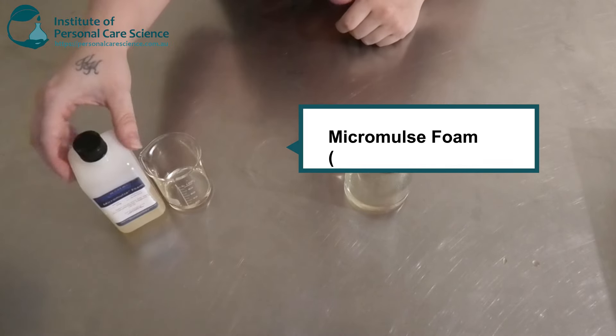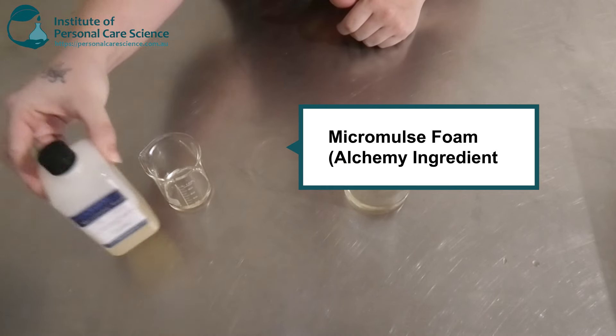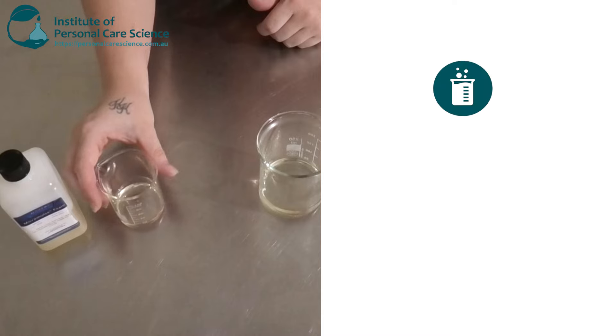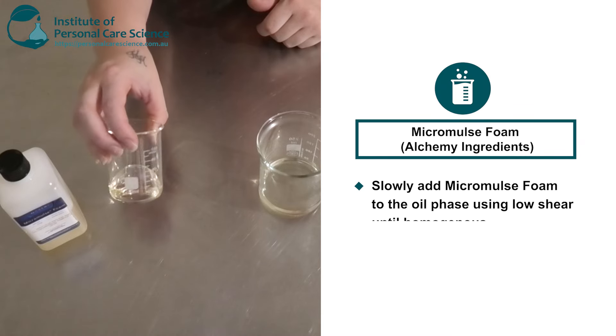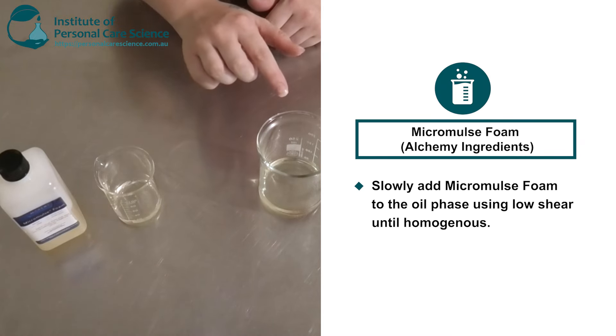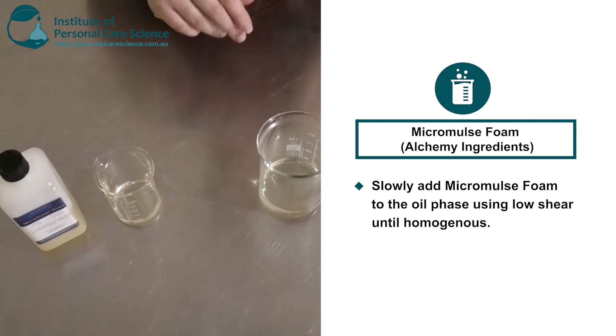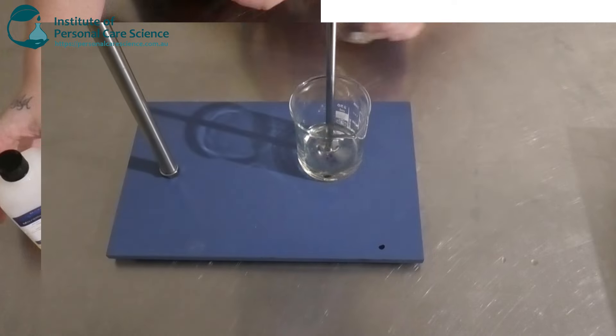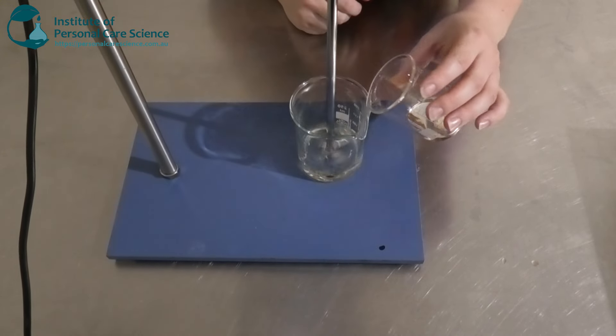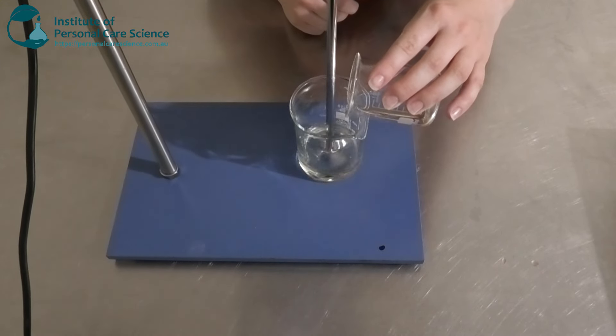Now, I'm going to be using the Micromulse Foam by Alchemy Ingredients. It is advised by the supplier that the Micromulse Foam is added slowly to the oil phase. And I'm going to use my overhead mixer, my propeller mixer. I'm going to be using low shear because you don't want to use high shear because you'll cause foam. And we're just going to slowly add the Micromulse Foam to the oil phase.